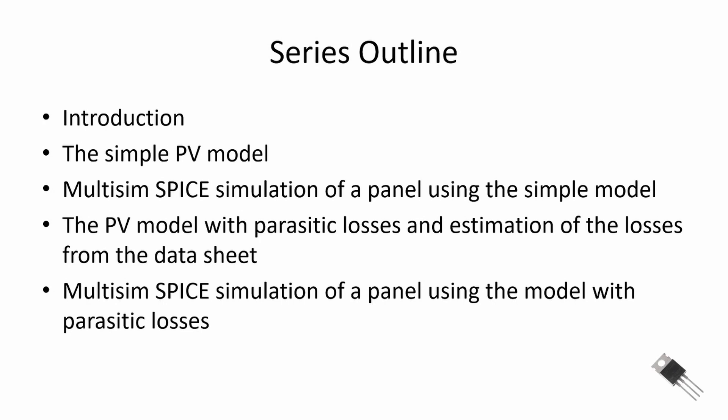Here's an outline of the videos in this series. This first one is our introduction. In the next video, I'll provide a simple electrical circuit model for the photovoltaic cell — it consists of a constant current source whose magnitude is proportional to the irradiance on the cell, with a diode in parallel. In the third video, we'll use that simple model to create a SPICE simulation for both a cell and a panel. One thing we'll notice is that the simple model overestimates the maximum power point, so we'll incorporate parasitic losses into the model and estimate those losses from the data sheet.